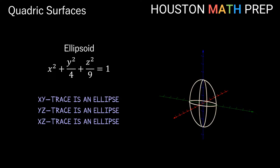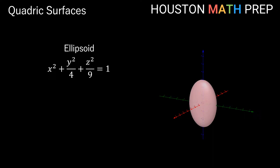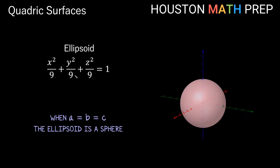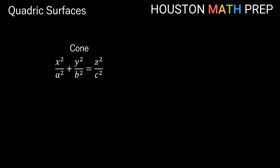Looking at all of the coordinate plane traces together, all three traces are ellipses — a great reason to call this an ellipsoid. Graphing the surface, we can clearly see the ellipsoid looking like the shape of a piece of candy or a tablet of medicine. If we make b and c equal, it looks more like an M&M. And if all constants a, b, and c are equal, the ellipsoid becomes a sphere, which we can confirm by multiplying through by the common denominator.